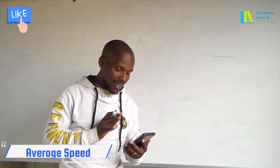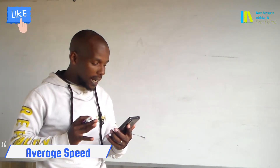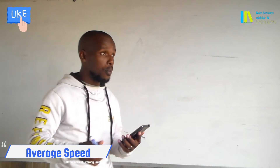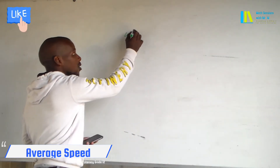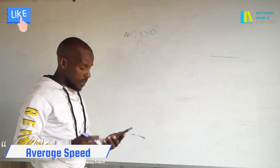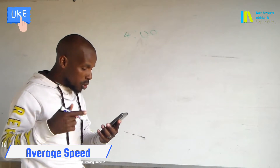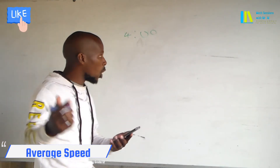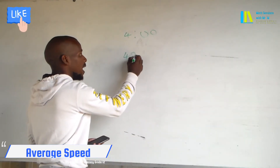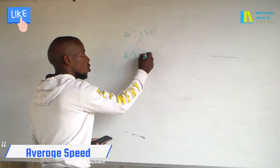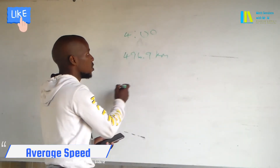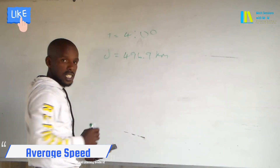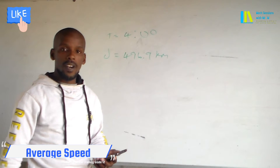We have a statement here that says a learner and his parents will leave Graaff-Reinet at 4am — so we are given 4am — and they are to travel a distance of 496.9 km. So we have two givens: time and distance.